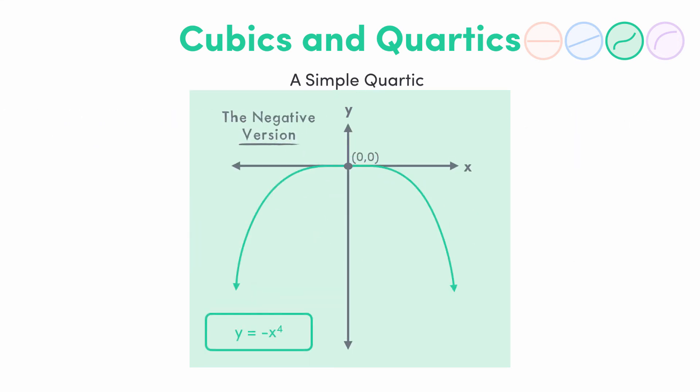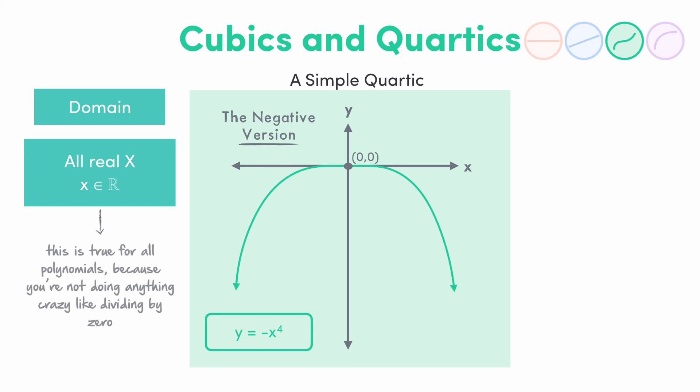In terms of domain and range, the domain is going to be all real x values again, because any x value works. That's actually a general thing for any polynomial, because you're not doing any crazy things like dividing by 0. For the range, you're going to have a minimum or maximum value, so for example the range of f of x equals negative x to the power of 4 is all y is less than or equal to 0.